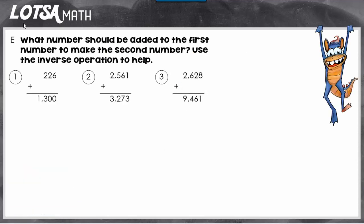So these are addition problems, so that means we're going to have to use subtraction to find the answer. If we look at number one, we see 226 plus something equals 1,300.